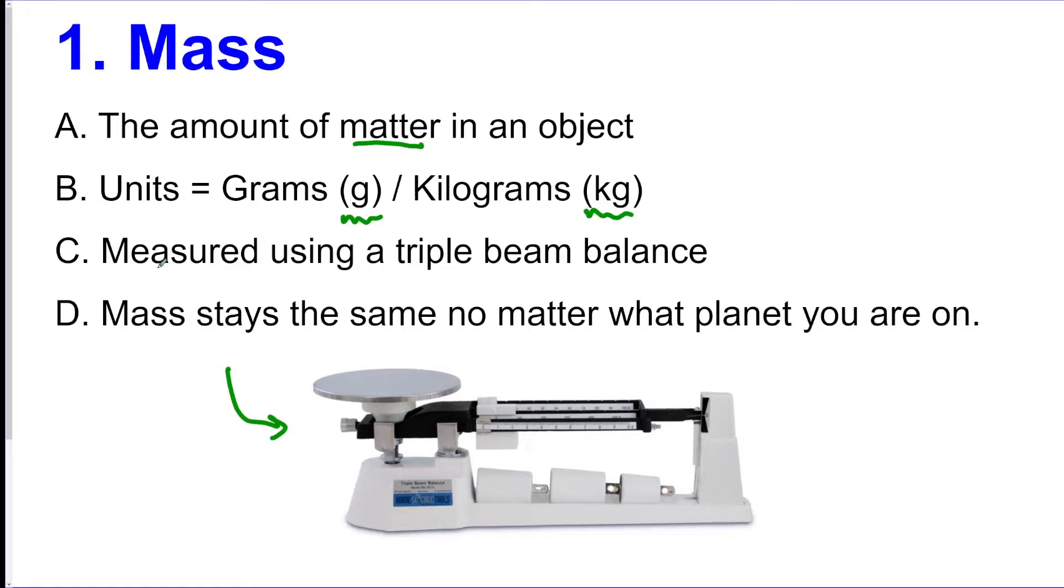You're going to use one of these triple beam balances to get the mass of an item. Now the big thing about mass is that it stays the same no matter what planet you would be on. The planet is going to be affecting what we call weight. Mass is the amount of stuff that's in the object.